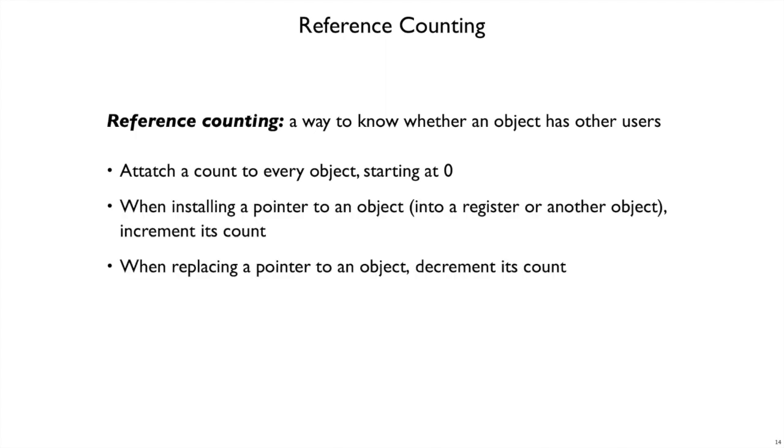Whenever we have an object and we put a reference to that object in a register or in some other newly allocated object, then we will increment the count on that object. So it'll count from zero, one, two, and so on.